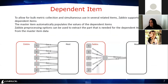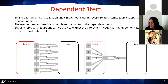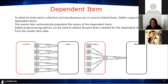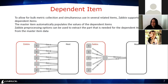The third important feature is the dependent item. It allows bulk data collection and simultaneous use in several related items, and we are going to optimize the data collection. Because as everyone can see, we're going to have just one single connection to the application, and Zabbix will organize all the information inside. This way we optimize the data collection.